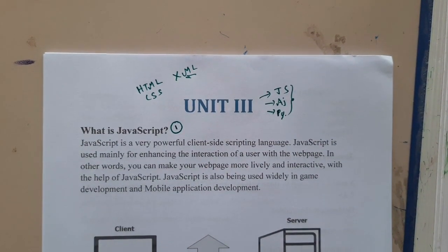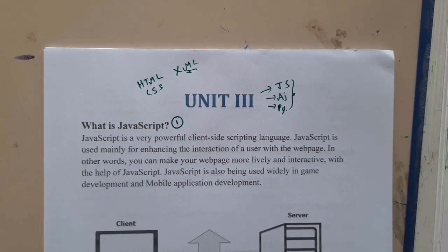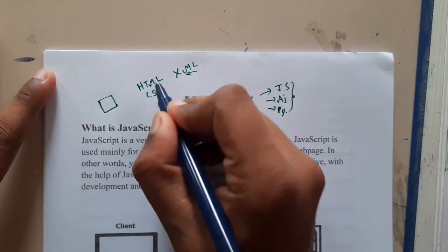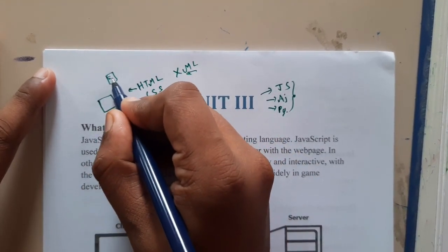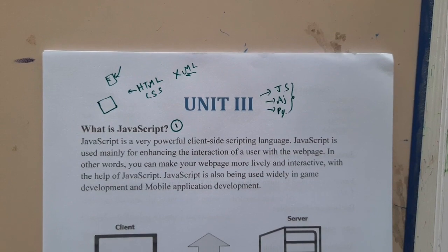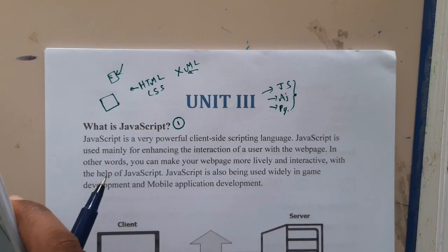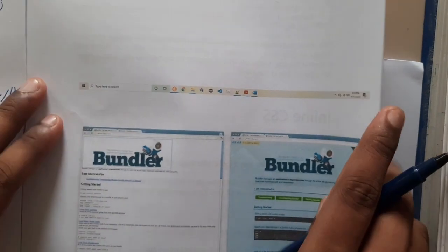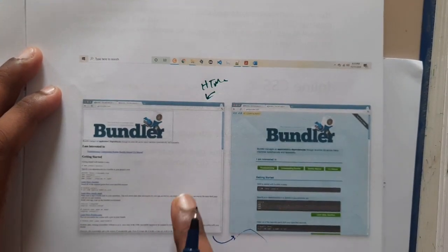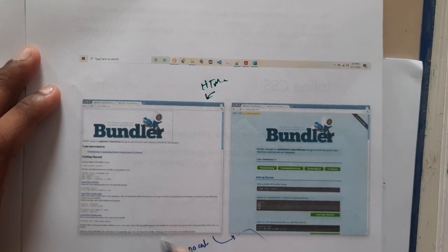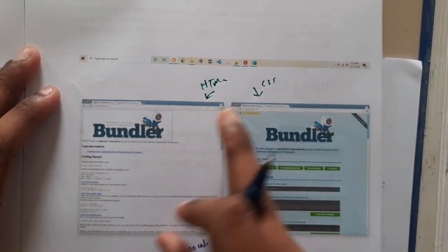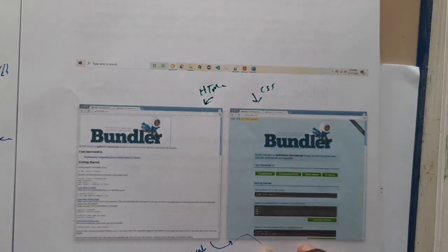First, what is the need of JavaScript? Previously, with only HTML, only the structure was designed. If you observe, this website with HTML only has no color, no variations — just plain text. Whereas after CSS it became colorful and attractive. So HTML is for structure, CSS is for styling.